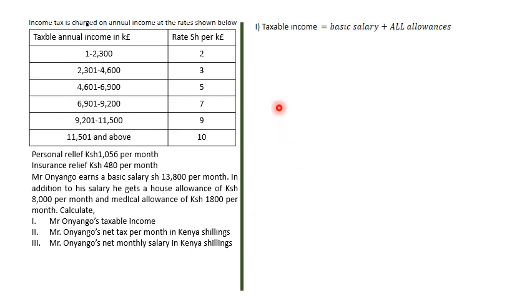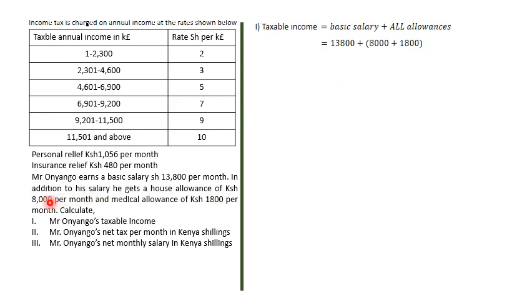The first question asks for taxable income. That's simply basic salary plus all allowances: 13,800 plus 8,000 and 1,800, which gives us 23,600.